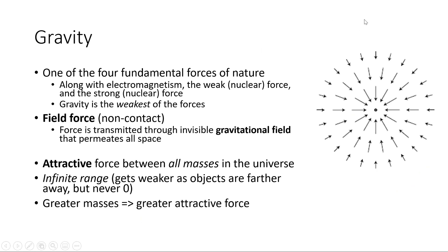Gravity is one of the four fundamental forces of nature. The other three forces are electromagnetism, the weak force, and the strong force. But gravity is by far the weakest of all of these forces. Like all the other fundamental forces, it is a field force, which means the objects don't actually have to be touching for the force to be transmitted. Gravity is transmitted through a gravitational field. The gravitational field is produced by masses — it's invisible, but it permeates all of space. It exists everywhere even if there's not an object to feel that gravitational force; the field is still there, and that field is what will pull on things and cause them to be gravitationally pulled.